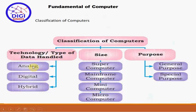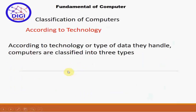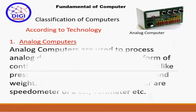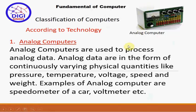Technology یا type of data handling کے تحت analog، digital اور hybrid computers آتے ہیں۔ Analog computers وہ computers ہیں جو analog type کی data کو process کرتے ہیں۔ Analog data continuous varying physical quantities کی form میں ہوتی ہے - جیسے pressure، temperature، voltage، speed وغیرہ۔